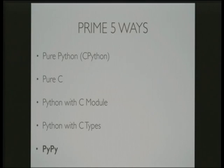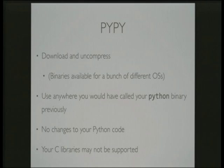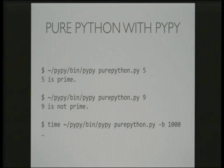The final implementation is under PyPy, just to get a speed comparison. PyPy is a just-in-time compiler for Python, written in Python. It's super easy to install — you just download and uncompress it. There are binaries available for a bunch of different operating systems, and you can use it anywhere you would have previously called your Python binary. You don't need to make any changes to your Python code, provided your libraries are supported. Because it doesn't use C, libraries written in C might not work with it. To run it, you just call the PyPy binary instead of Python and pass it the path to the original script.